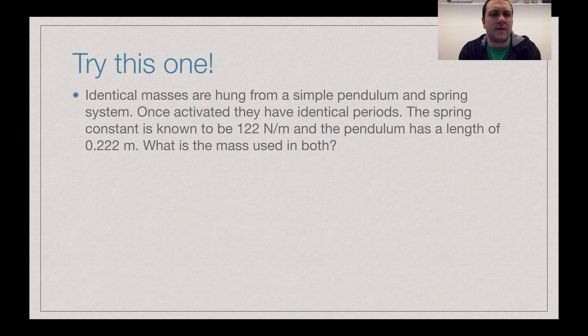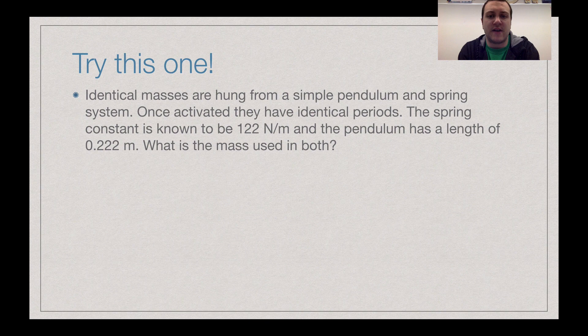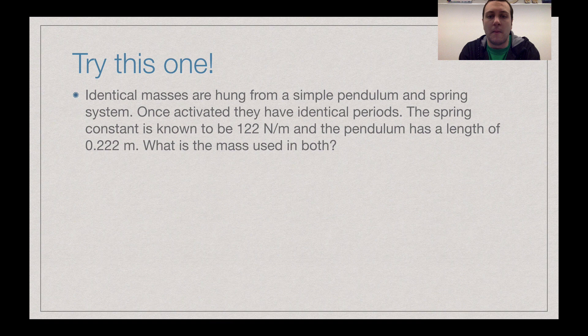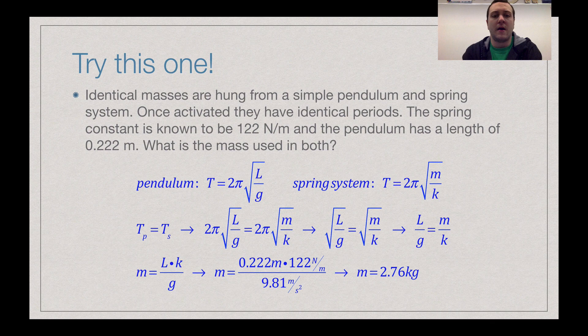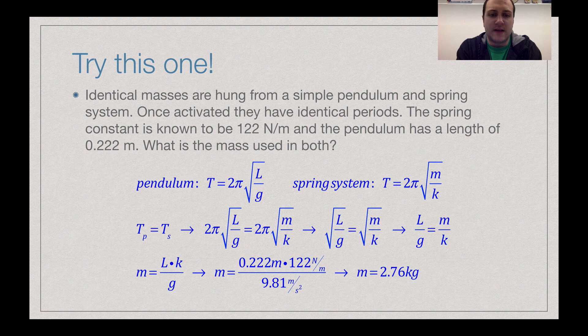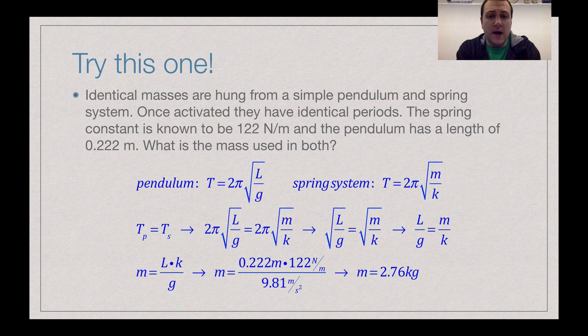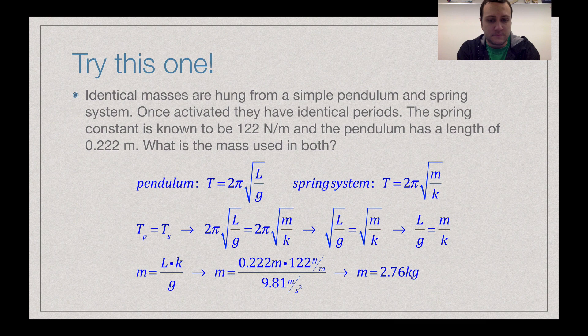Here's another one. Another one kind of combines this stuff here. So identical masses are hung from a simple pendulum and a spring system. Once activated, they have identical periods. The spring constant is known to be 122 newtons per meter. And the pendulum has a length of 0.222 meters. What is the mass used in both? What is the mass used in both? Now we have a pendulum and we have a spring system. So we've got 2 pi times the square root of L over G, 2 pi times the square root of M over K. Remember the mass does not matter for that pendulum, but they have identical periods. So the period of the pendulum equals the period of the spring.